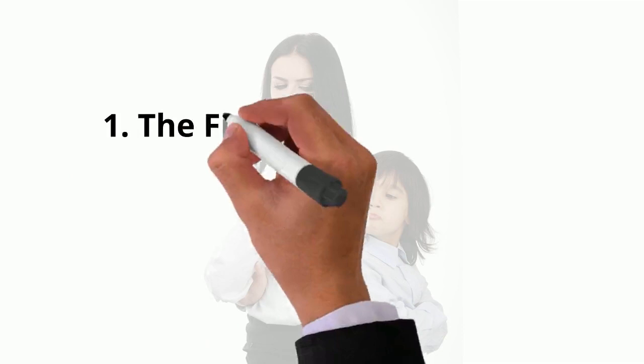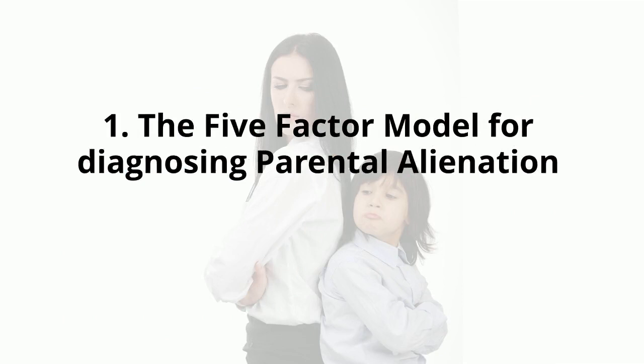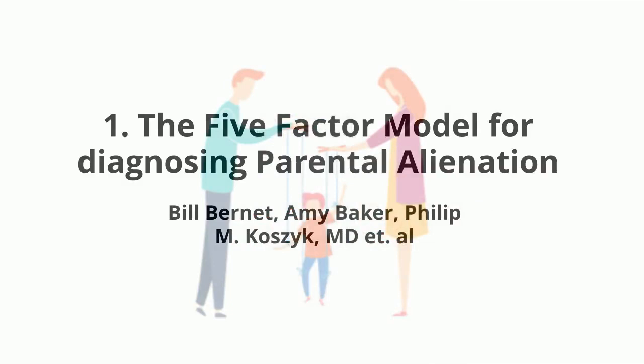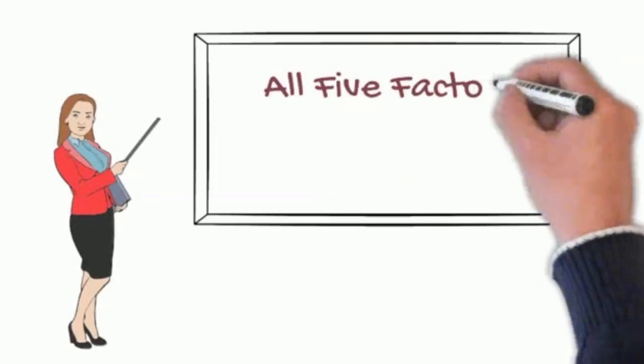Number one, the five-factor model. It's short, simple, and easy, and presents an opportunity for professionals across the social, legal, and mental health professions to understand what parental alienation is in a straightforward, evidence-based manner. All five things need to be present so there's no mistake because the treatment for alienation and abuse is the opposite approach.